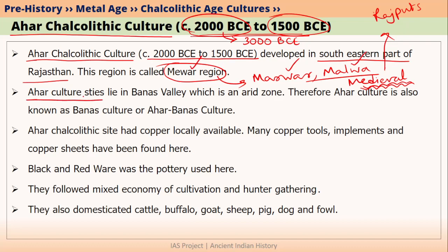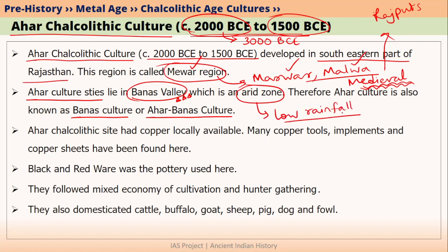Ahar Chalcolithic sites are mainly located in the Banas valley. That is why Ahar Chalcolithic culture is also known as Banas culture, or sometimes Ahar Banas culture. We must also note that the Banas valley area is basically an arid zone — meaning it has very low rainfall, generally less than 25 cm per year. An area with 25 to 50 cm per year is called a semi-arid zone.